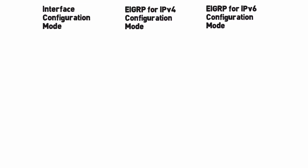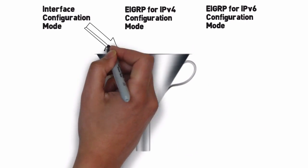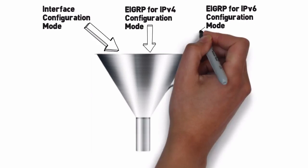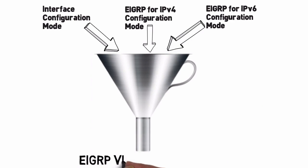The great news is there's a new approach to EIGRP configuration, and it's called named EIGRP. Named EIGRP is going to take the commands that we would normally give under these various configuration modes and put them all together. We can consolidate them into something called an EIGRP virtual instance — a hierarchy under which we can configure all of our EIGRP commands. No longer do we need to bounce back and forth between all these different configuration modes; instead, we just stay in this one hierarchy.